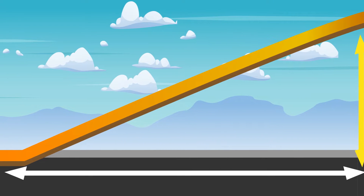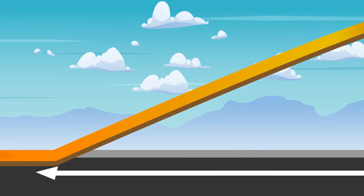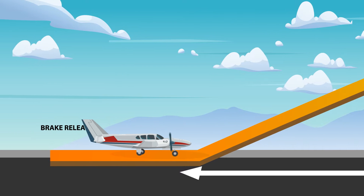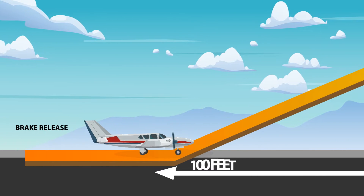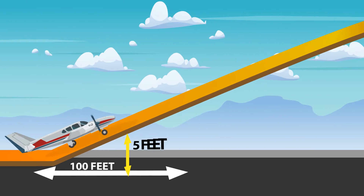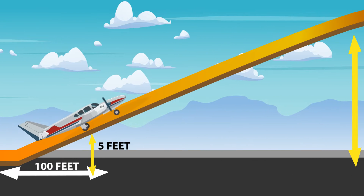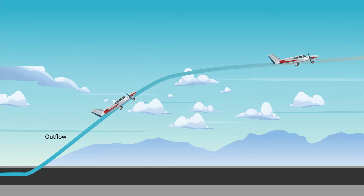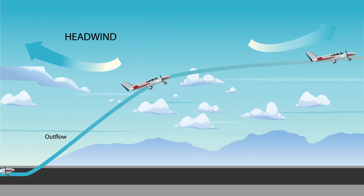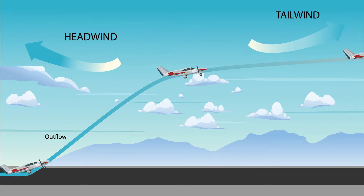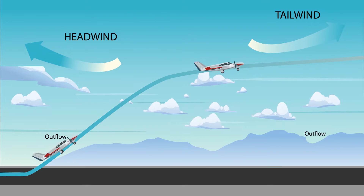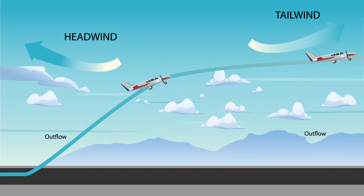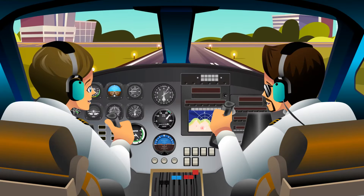For example, a 5% climb gradient is an altitude gain of 5 feet for a horizontal travel distance of 100 feet. Unlike rate of climb, climb gradient is affected by wind. The climb gradient improves with a headwind and is reduced with a tailwind.